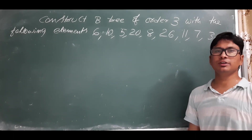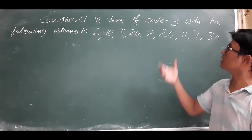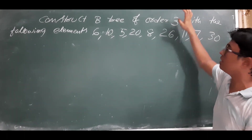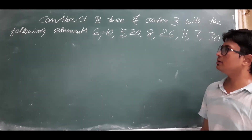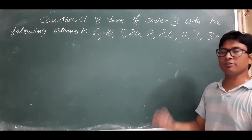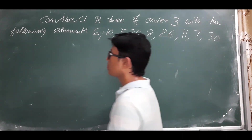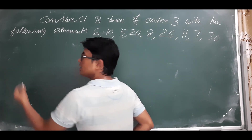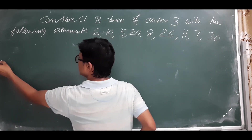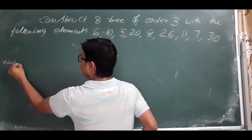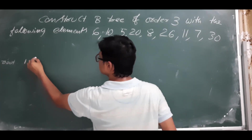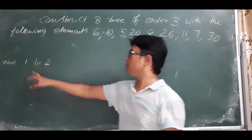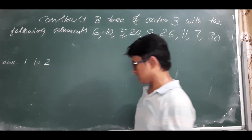Good morning students. In the last video we constructed the B-tree with order four using the same elements. In this example I have given order three for better understanding. If the order is three, we focus on how many keys there will be. The minimum number of keys for the root node is one, and the maximum is p minus one, so two keys are possible.